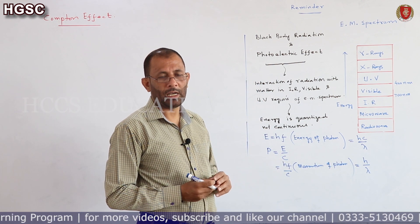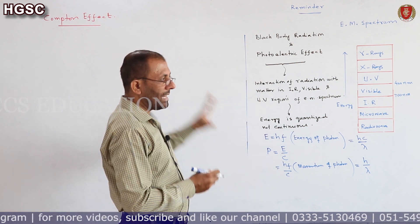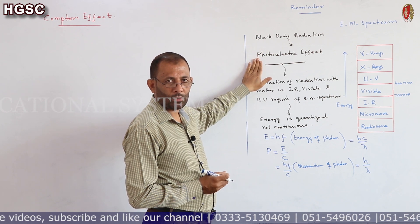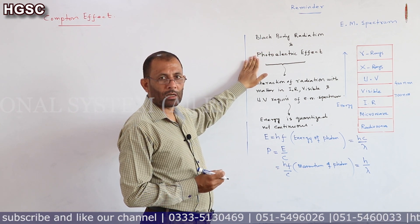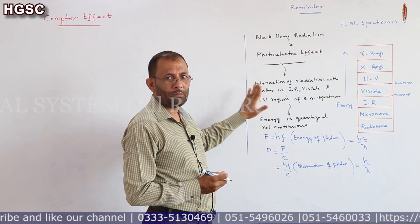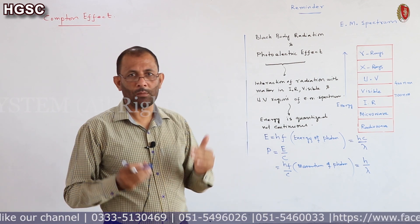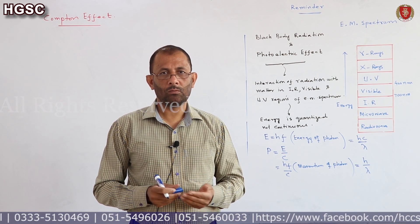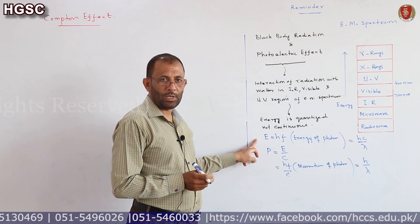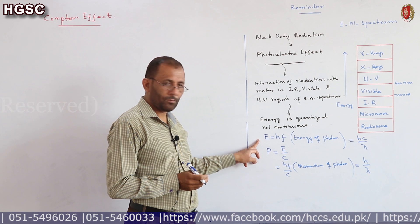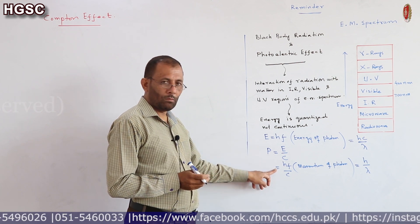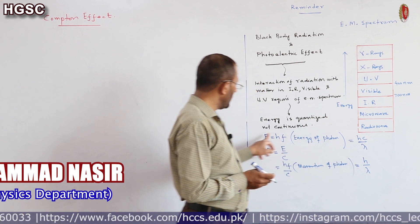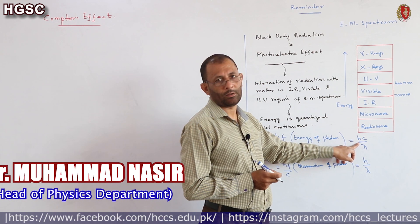To summarize what we covered in the previous topic: black body radiation and photoelectric effect are interactions of radiation with matter, telling us that energy is emitted and absorbed in the form of packets — quanta. The energy of each quantum, which is a single photon, is E = hf or E = hc/λ, and the momentum of a photon is p = h/λ.